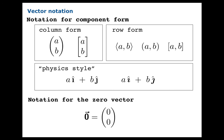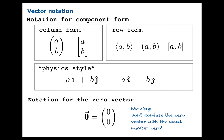There's usually a special notation for the zero vector. For example, you might have a boldface arrowed zero, which means the vector with components zero, zero. You should not confuse the zero vector with the usual number zero — they're different things, different kinds of quantities altogether.